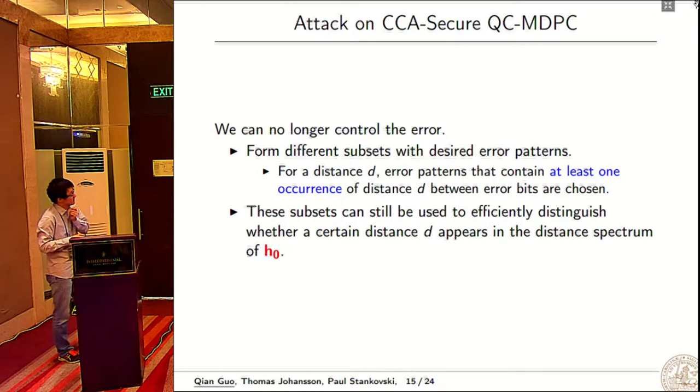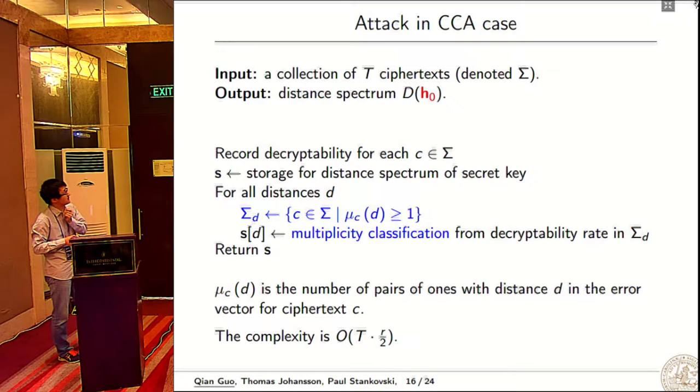For the CCA secure version, we can no longer control the error because error looks random. We form different subsets with designed error patterns - given distance d, we choose error patterns that contain at least one occurrence of distance d. We will show that these subsets can still be used to decide the distance spectrum. We get a collection of ciphertexts, record the decipherability, record the empirical decoding error probability, and do multiplicity classification.